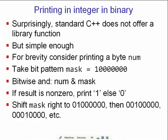Another example: printing an integer in binary. Surprisingly, standard C++ lets you print a number in decimal, hexadecimal, and octal, but there is no predefined library function that prints an integer or byte in binary format. However, it is simple enough to implement.